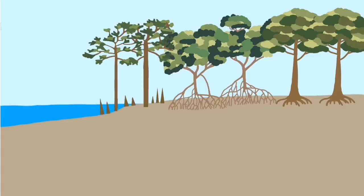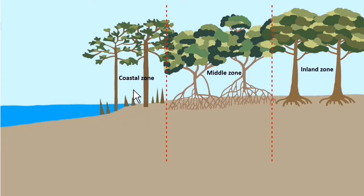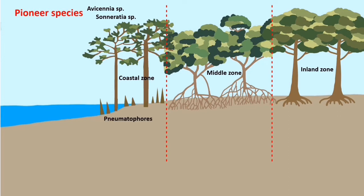The mangrove area consists of three zones: coastal zone, middle zone, and inland zone. The coastal zone is the area most exposed to big waves, where Avicennia species and Sonneratia species can be found. They are known as pioneer species, adapted to an enlarged root system and pneumatophores, which are breathing roots.